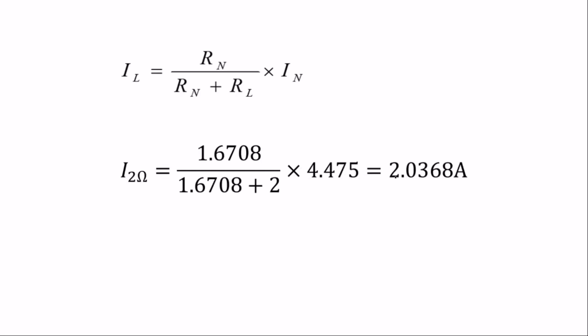When you do that correctly, you get 1.6708 over (1.6708 plus 2), times the Norton's current, which gives you 2.0368 amps. You must find the Norton's current using superposition, because without the Norton's current we cannot find the current in the 2 ohm resistor.